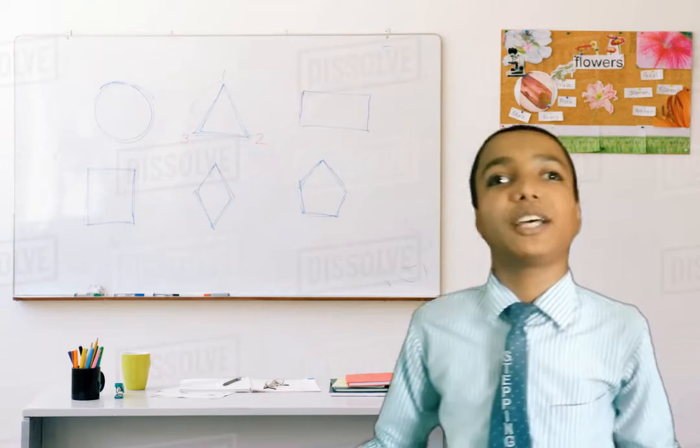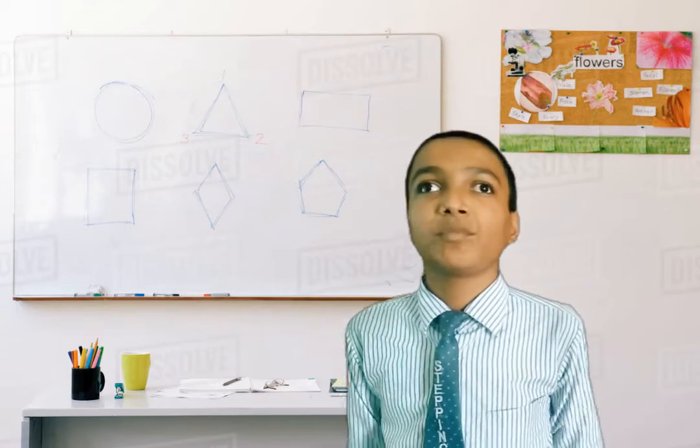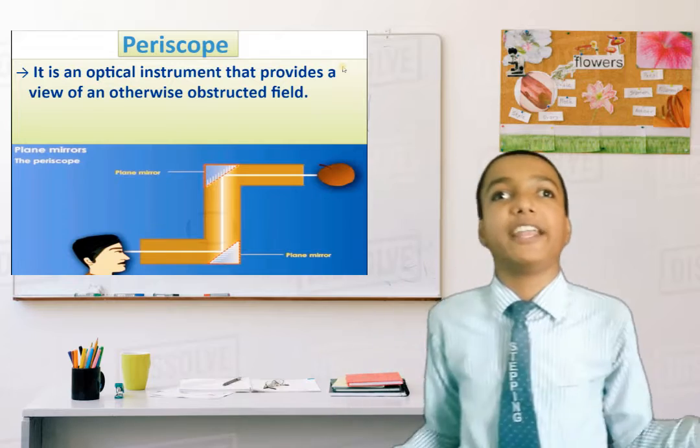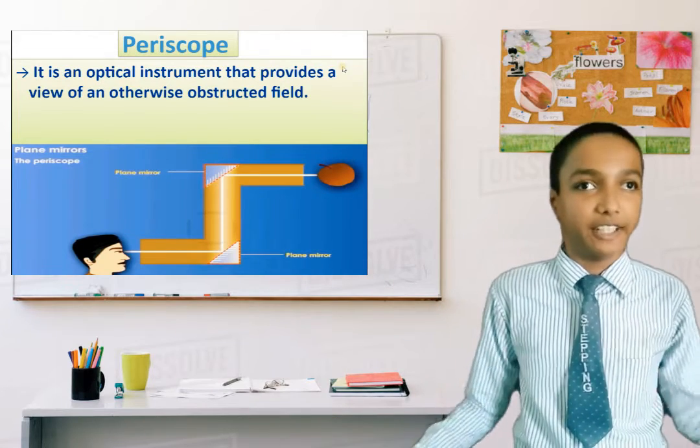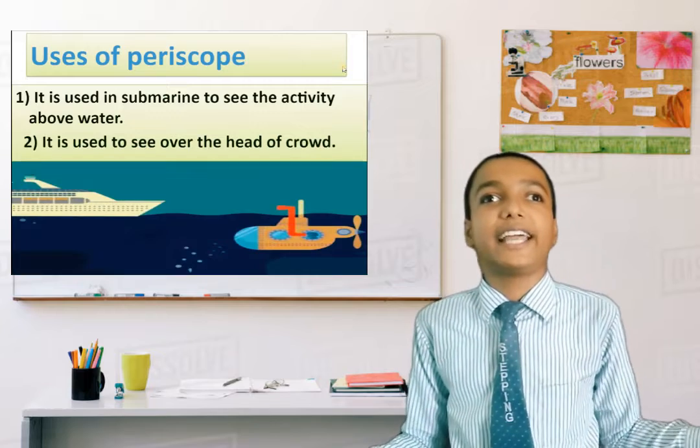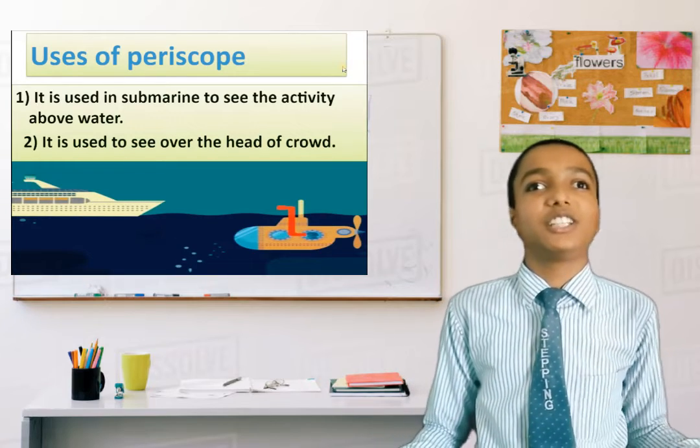Let's talk about some uses of reflection of light. Periscope: it is an optical instrument that provides a view of an otherwise obstructed field. It is used in submarines to see the activity above water and to see over the heads of crowds.